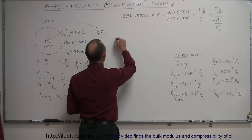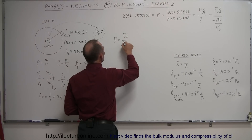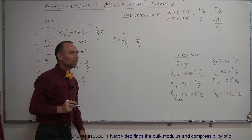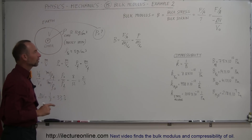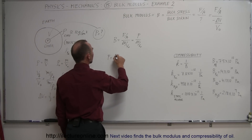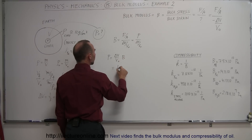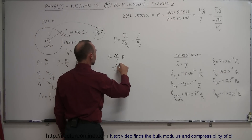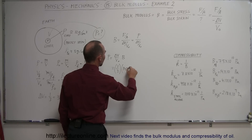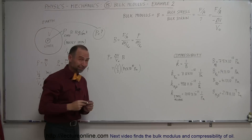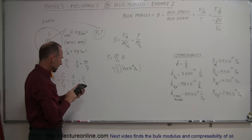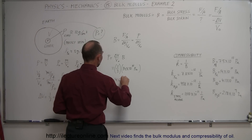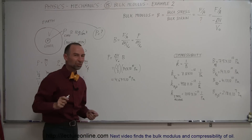Now let's use the bulk modulus. The bulk modulus equals the ratio of force divided by area, divided by the change in volume over the original volume — which is pressure divided by ΔV/V₀. The change in volume over the original volume is one-third, so the pressure equals one-third times the bulk modulus. The bulk modulus for iron is 14 times 10 to the 10th pascals, so we get 14×10¹⁰ divided by 3, which equals 4.67×10¹⁰ pascals.